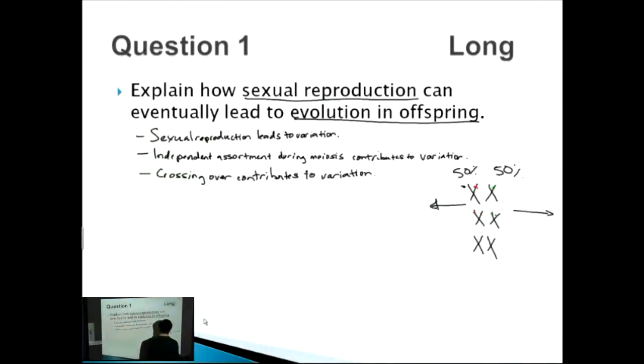The way that this contributes to variation is during the prophase of meiosis one. You have the lining up of homologous chromosomes and then these legs actually cross over each other. As it pulls apart, you essentially have a transfer of genetic material from one chromosome to another. So those are the first two.